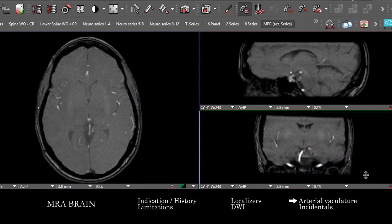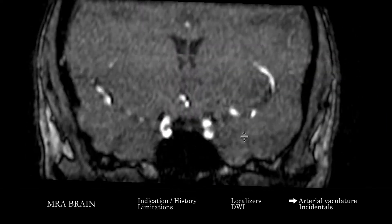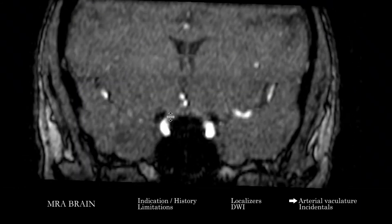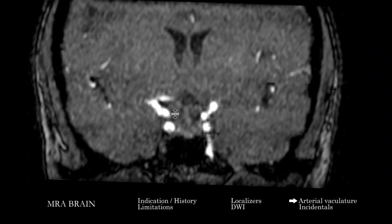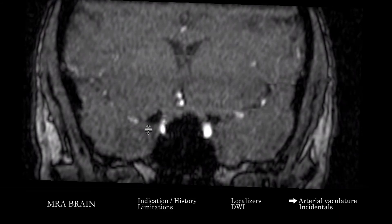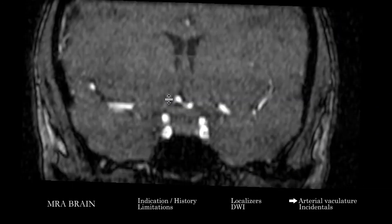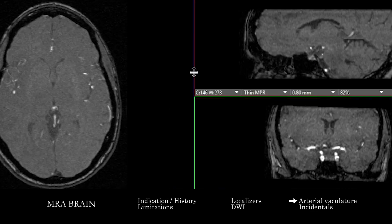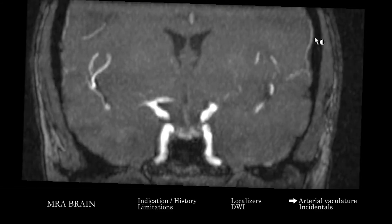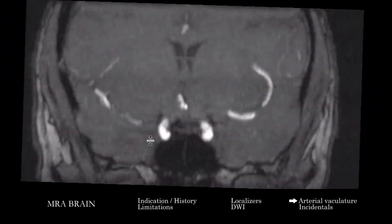Axials and coronals are a nice combination for the anterior circulation. I'm particularly careful to look at the carotid siphon area — the ICA cavernous segment and up into the bifurcation communicating area — on at least two projections, because subtle abnormalities here are easy to miss. Aneurysms at the carotid terminus can be difficult to see on just the axial, so I make sure to correlate. I'll then do both sides for the anterior circulation.